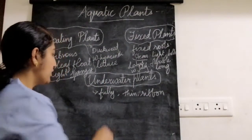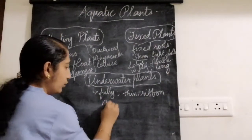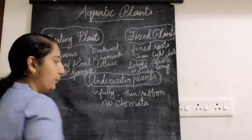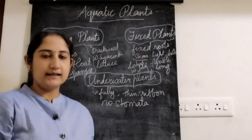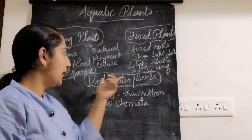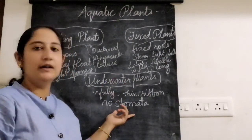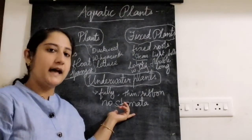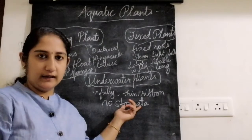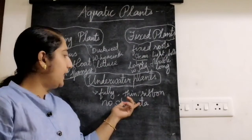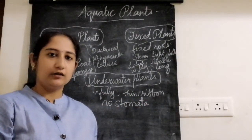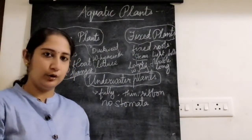These plants do not have stomata. Stomata are tiny openings present on the surface of the leaf for transpiration. Since underwater plants do not have stomata, they absorb the carbon dioxide needed for preparing food from the aquatic animals through their body.